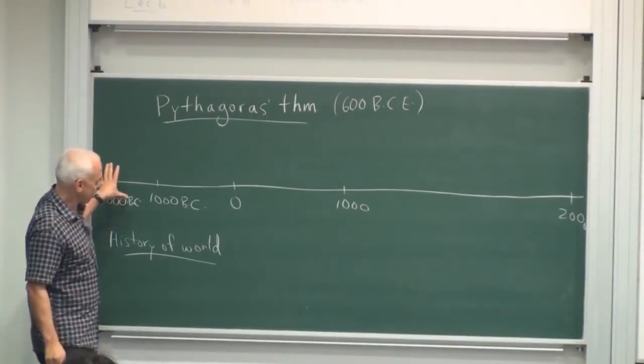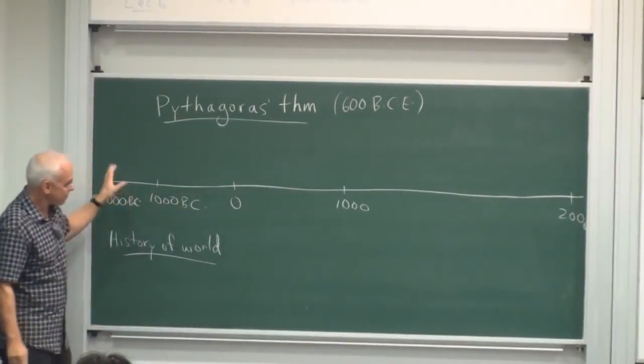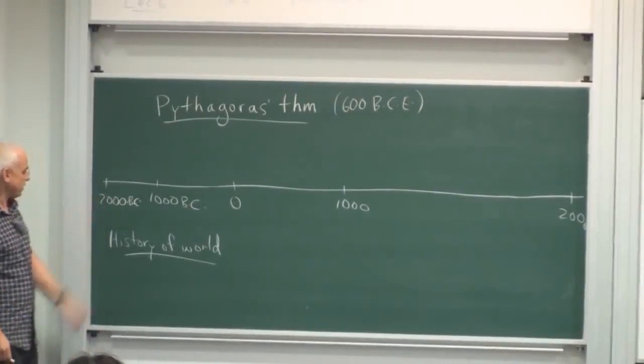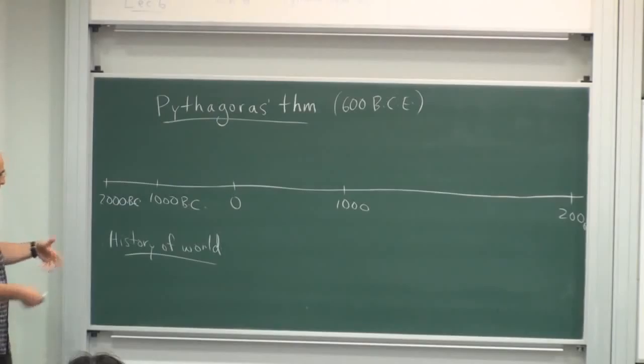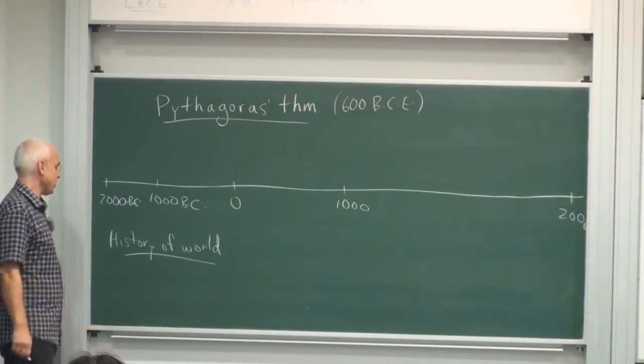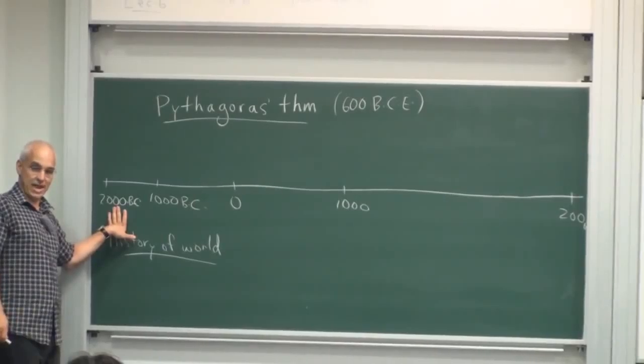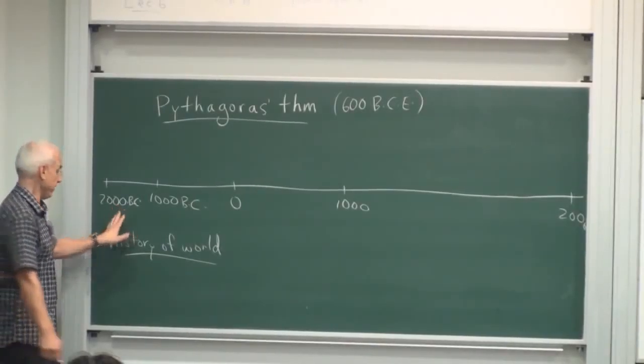So let's just position ourselves very quickly. Where were the major civilizations at what point? So early on, around 2000 BC, agrarian societies started to develop large-scale agriculture in the Mesopotamia, Egyptian regions.